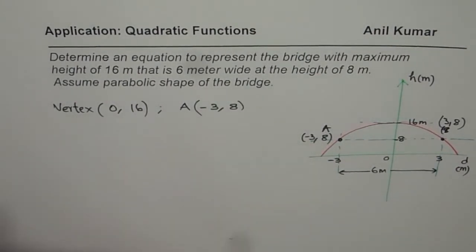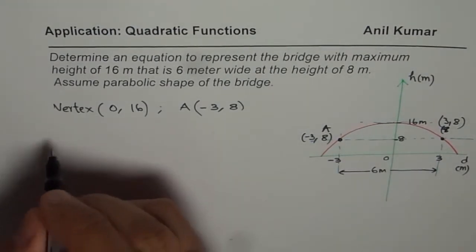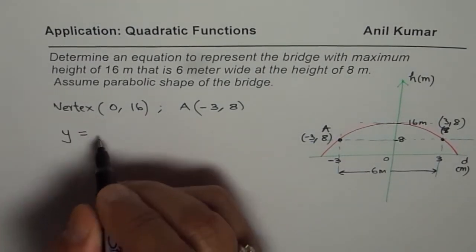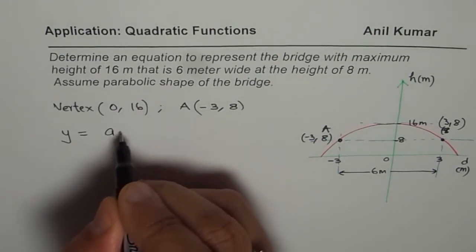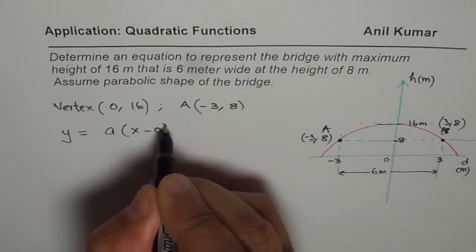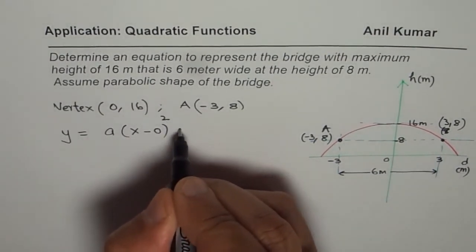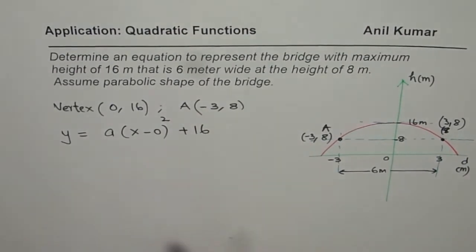I could write the equation with vertex at 0 and 16 as y equals to A times x minus 0 squared plus 16.